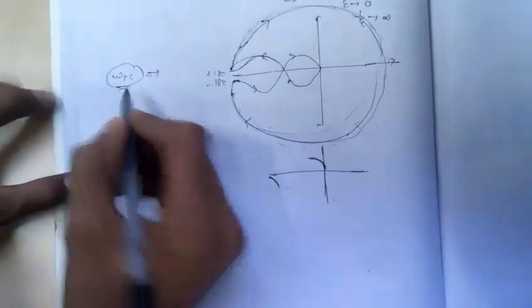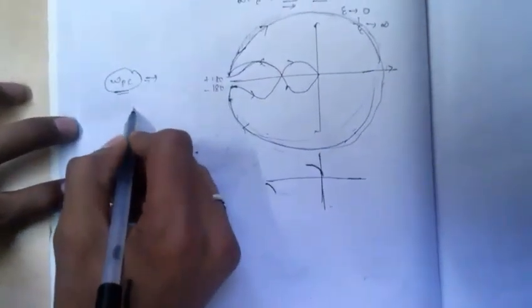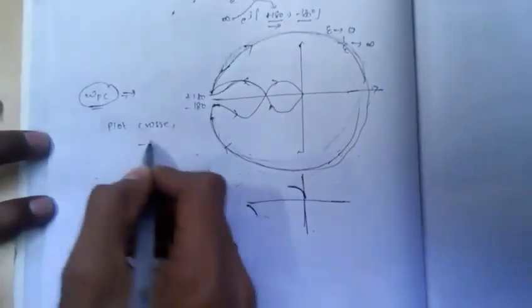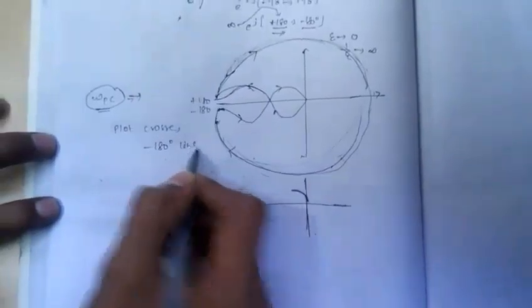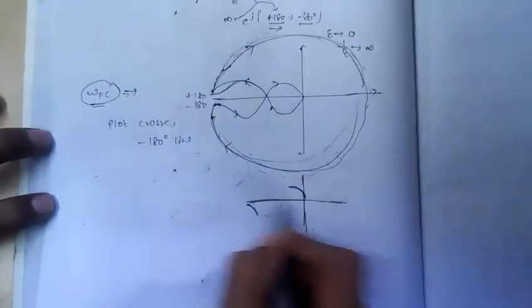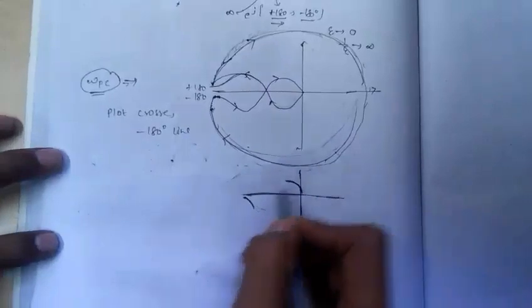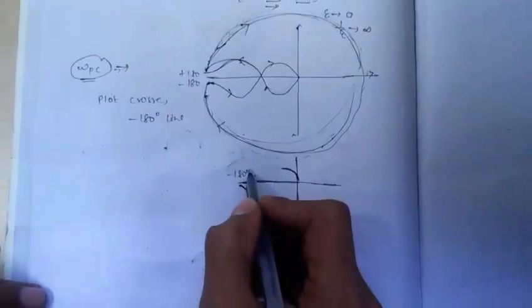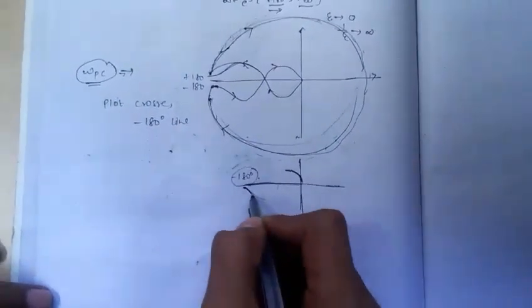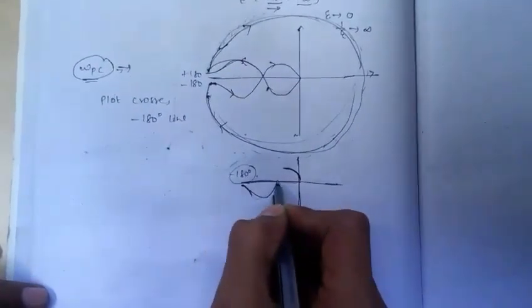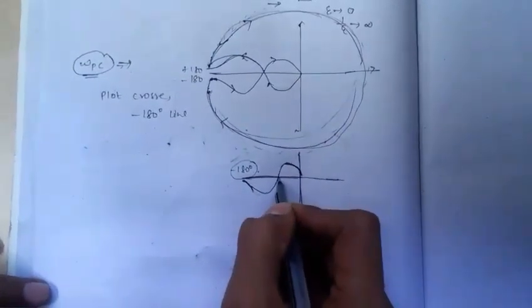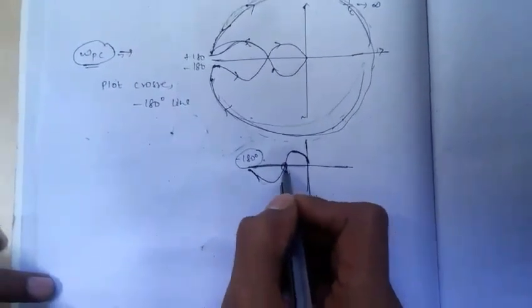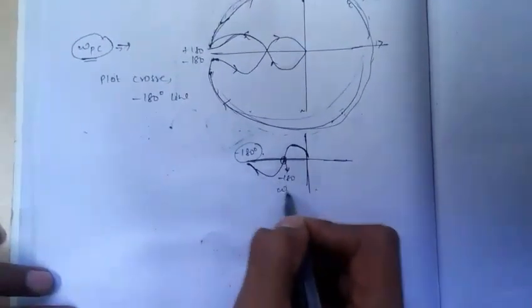Omega PC is nothing but the point at which the plot or curve crosses the minus 180 degree line — that is, it is crossing minus 180 degree phase, and hence it is called the phase crossover frequency. The point at which the curve is crossing minus 180 degree phase, suppose it is crossing at only one place — the value the curve has when it intersects the minus 180 degree line is Omega PC.